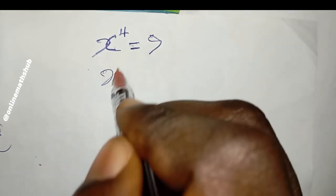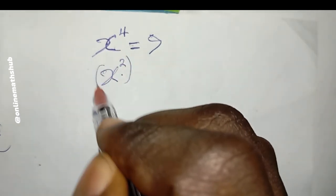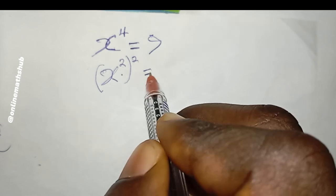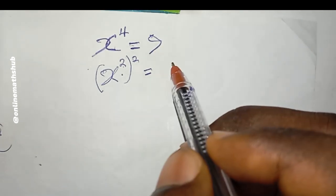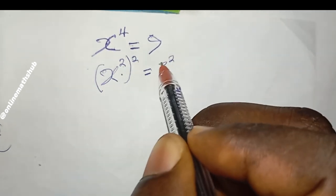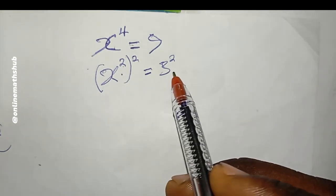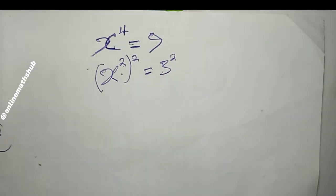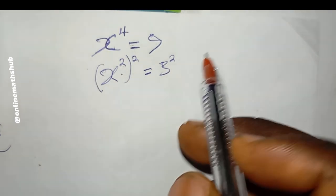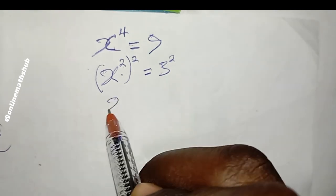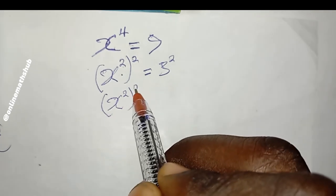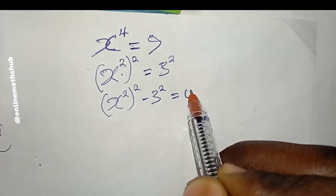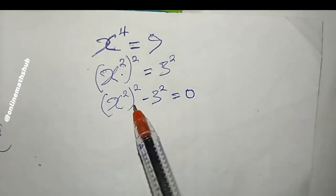To proceed, I'm going to write x⁴ as (x²)², so that multiplying the exponents gives me back x⁴. And I can write 9 as 3². Then I bring 3² to the left-hand side by subtracting it from both sides, giving me (x²)² minus 3² equals zero.